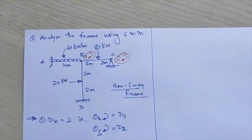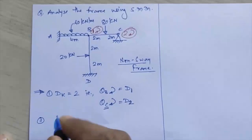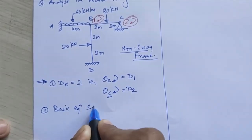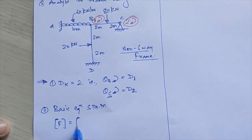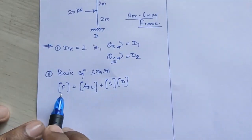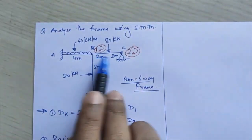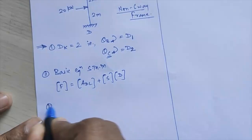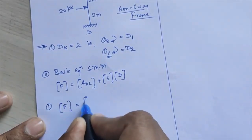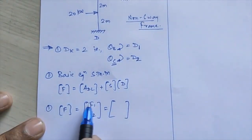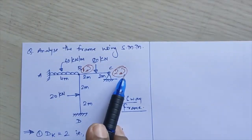Now we will proceed to the second step — the basic equation. The basic equation of the stiffness matrix method is: F = ADL + S × D, where F represents the corresponding forces at the selected coordinate points. For the F matrix with two redundants, we will have F1 and F2. We need to check whether any corresponding forces are given at points B and C.